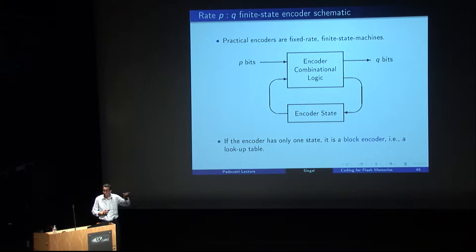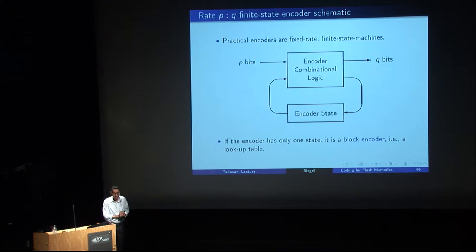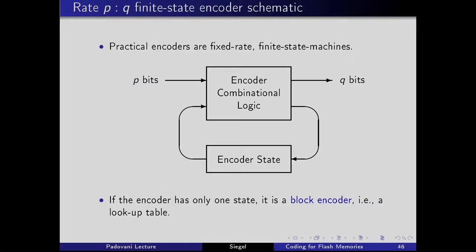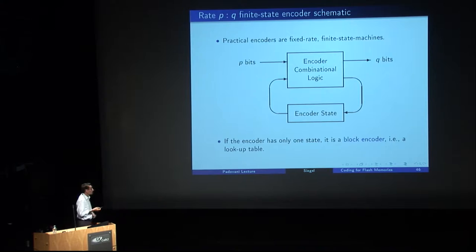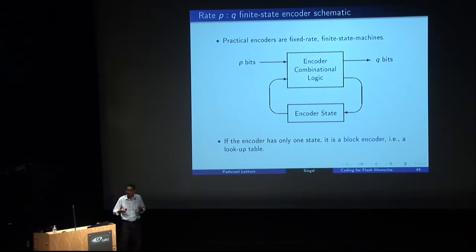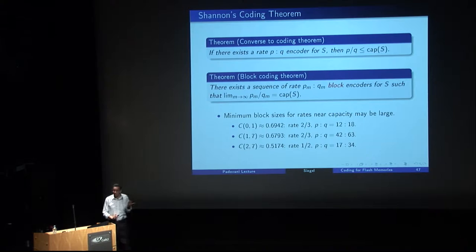For code design, Shannon proposed finite state encoders. A p:q finite state encoder takes p bits at a time and produces q bits, with some combinational logic and an encoder state. Depending on the state, it computes q output bits and updates the state. If there's only one state, it's a block encoder — essentially a lookup table with no state to update. With that in mind we can restate Shannon's theorem.